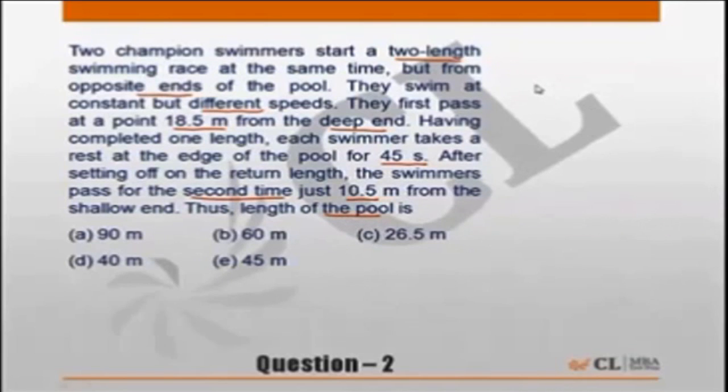So what the question is telling us: pool, swimming pool of length L. Let me assume this is the shallow end and this is the deep end. Both start swimming. First time they meet, they meet 18.5 meters from the deep end. So if the length of the pool is L, this portion will be L minus 18.5 meters.